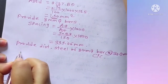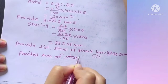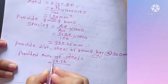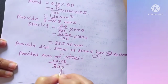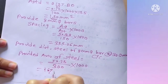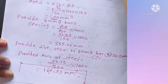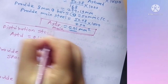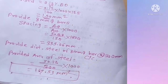The provided area of steel is calculated as: (50.28 / 300) × 1000 = 167.53 mm². This is the provided steel for distribution reinforcement. In this way, we calculate the main steel and distribution steel for the one-way slab design.